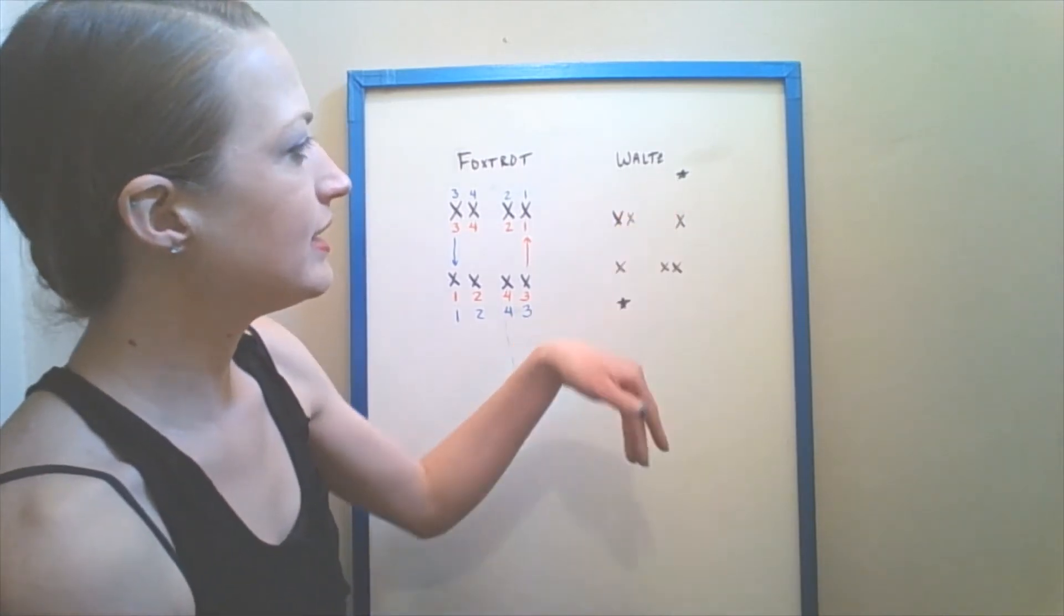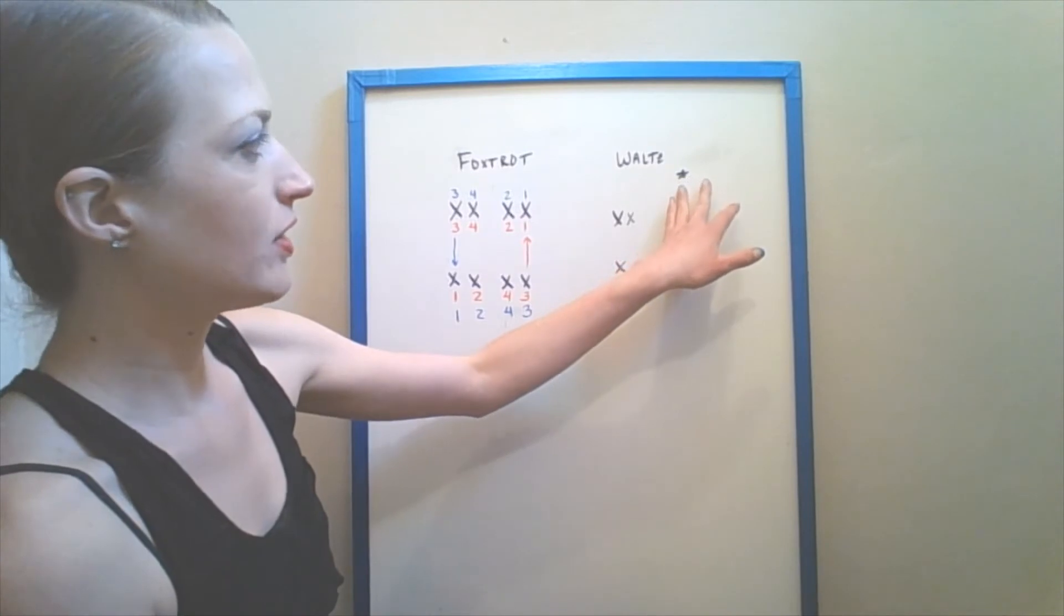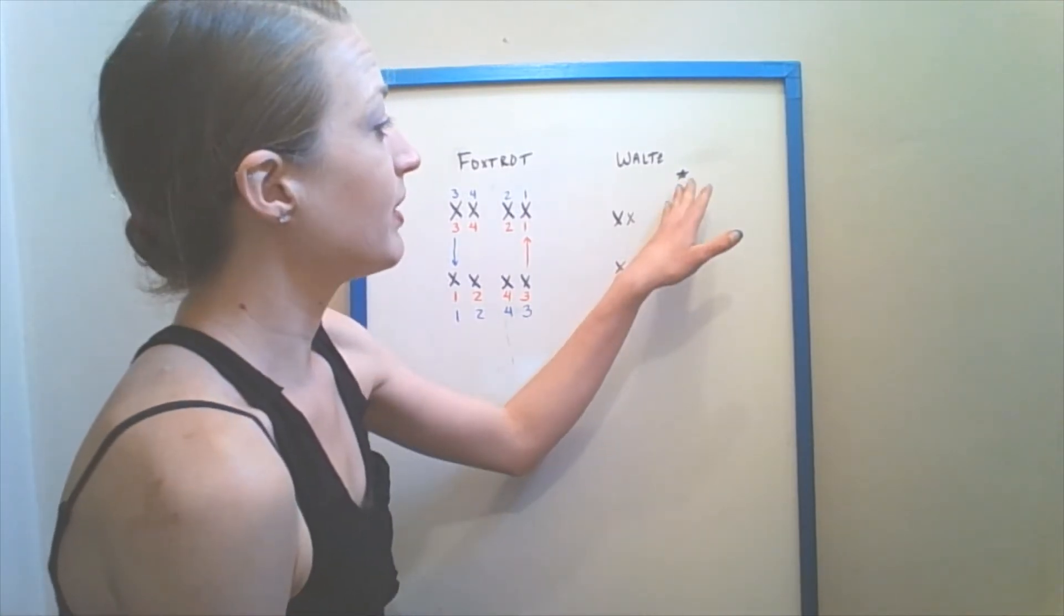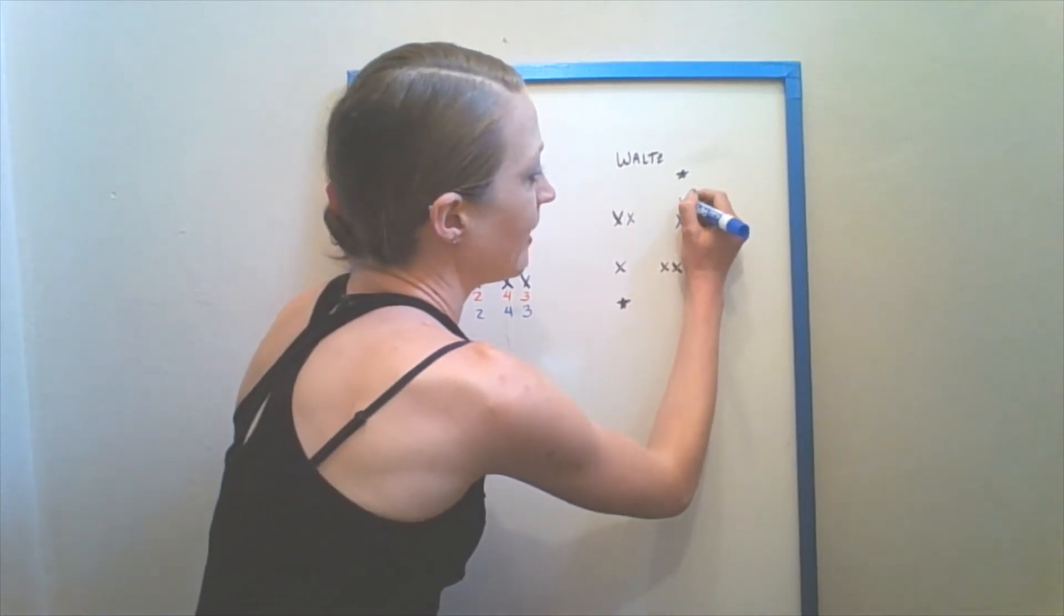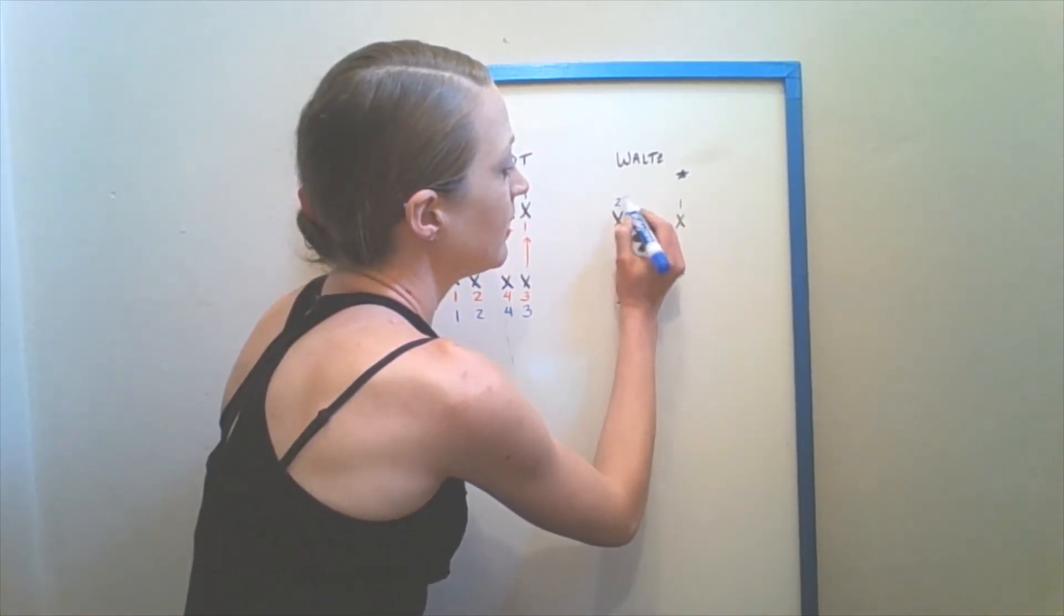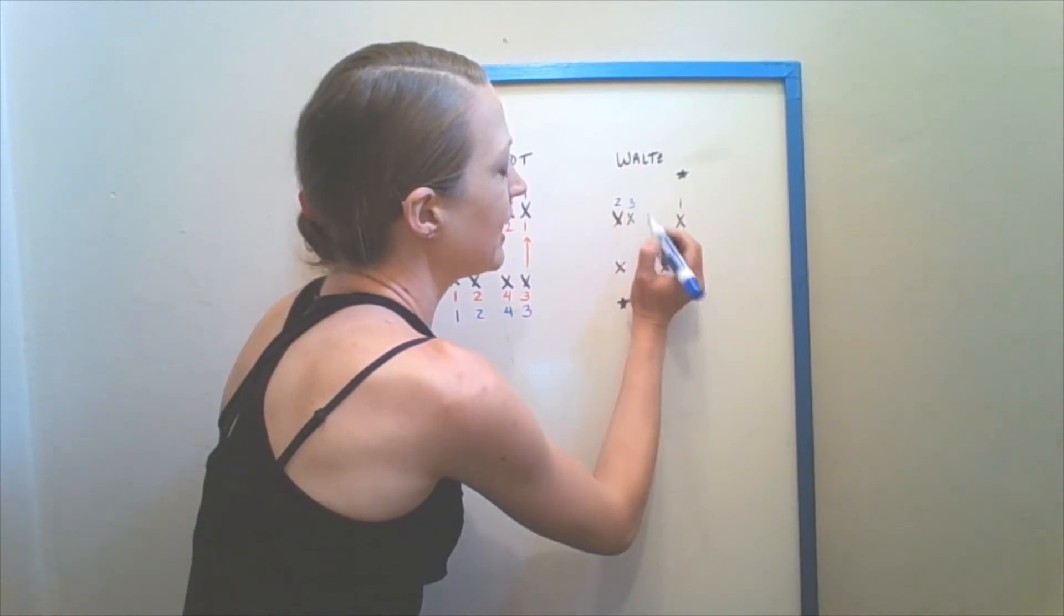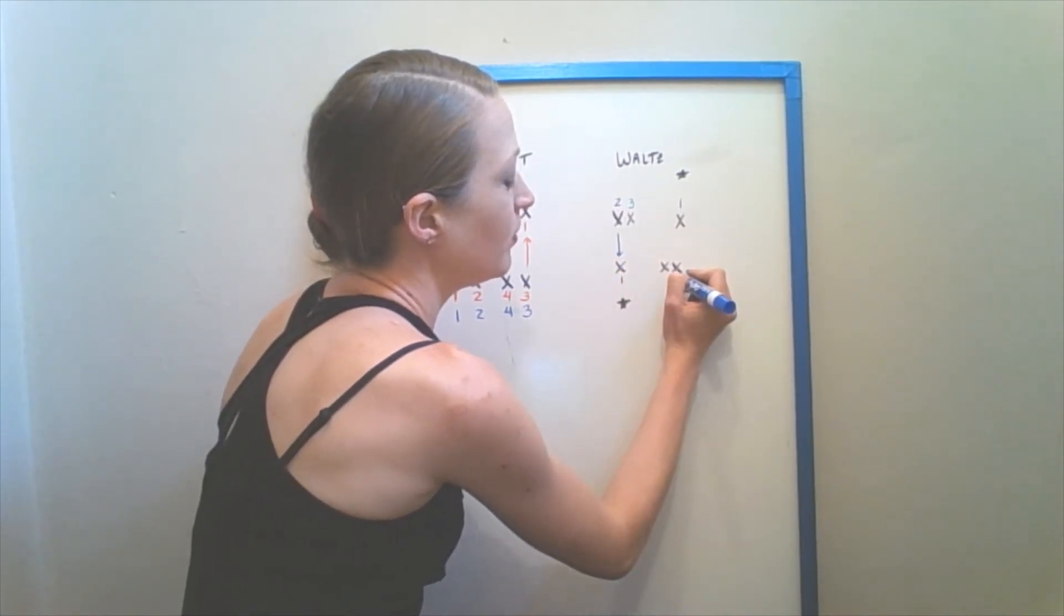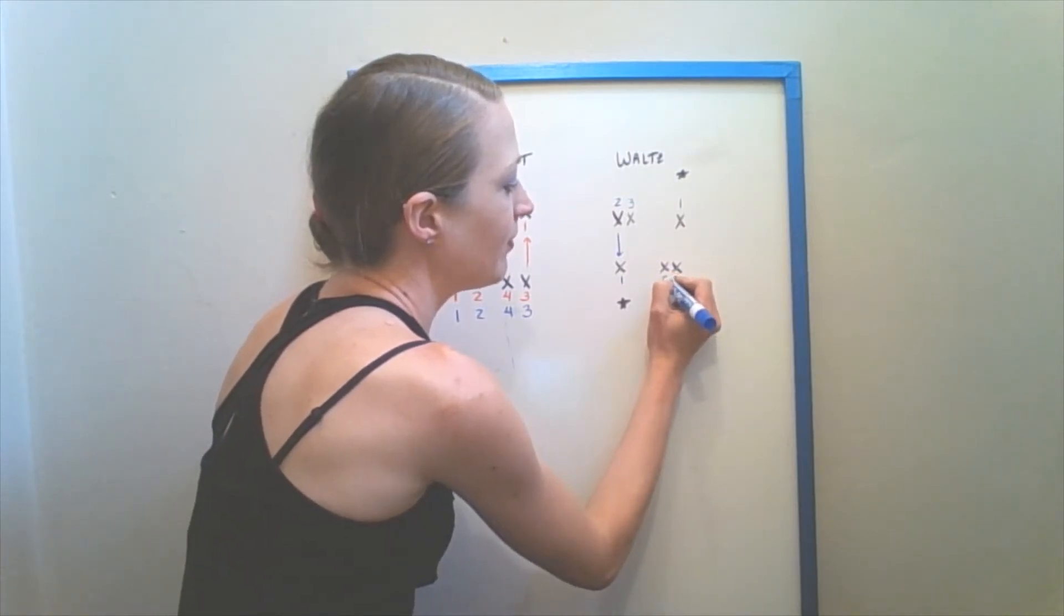Your waltz is similar. So I gave our starting point. If I'm a follower, I would start with my right foot moving back, that would be count one. My left foot is two. I bring my right foot together on three. I progress backwards with my left foot on count one. I move to the side with my right on two, and I bring my left foot in on three. So I'm traveling backwards in line.